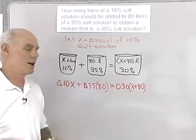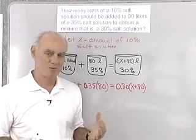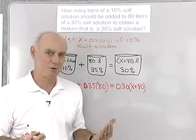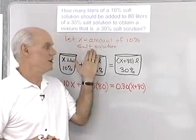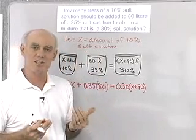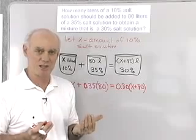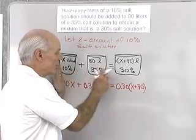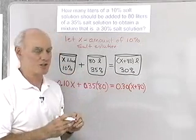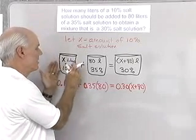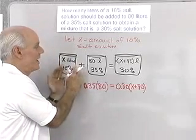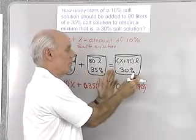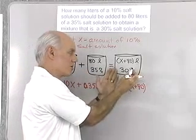It takes a little getting used to look at a problem this way, but after you've solved a couple of these, it's a pretty simple process. We let X equal whatever's asked for — in this case, the number of liters of 10% salt solution. I draw a diagram: X liters at 10% salt, plus 80 liters at 35% salt, gives X plus 80 liters at 30% salt.